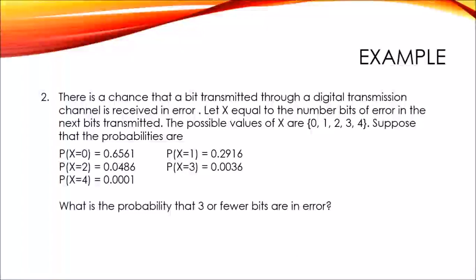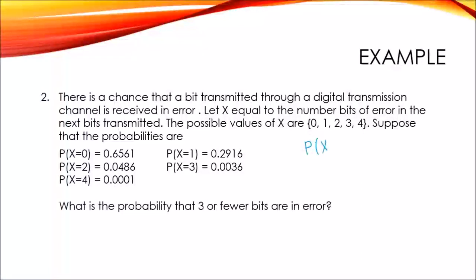For the second question: there is a chance that a bit transmitted through a digital transmission channel is received in error. Let x, our random variable, equal the number of bits in error in the next bits transmitted. The possible values of x are zero, one, two, three, and four, with probabilities 0.6561, 0.2916, 0.0486, 0.0036, and 0.0001 respectively. The question asks: what is the probability that three or fewer bits are in error, that is P(x ≤ 3)?